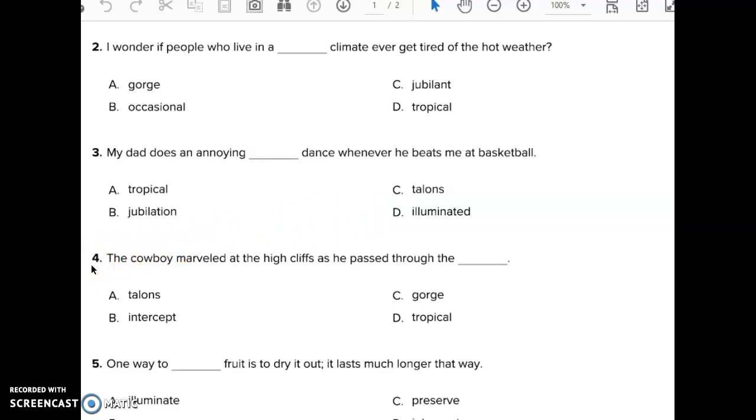Question 4. The cowboy marveled at the high cliffs as he passed through the blank. A: Talons. B: Intercept. C: Gorge. D: Tropical.